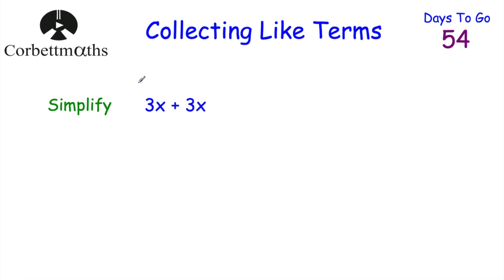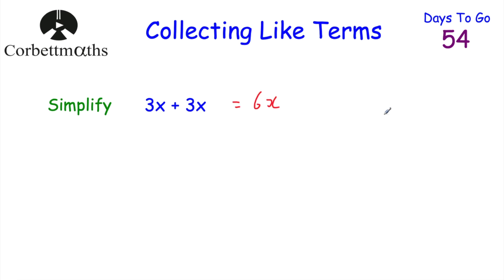Let's have a look at our next question. Simplify 3x + 3x. So 3x's plus another 3x's would be 6x's. The answer is 6x.